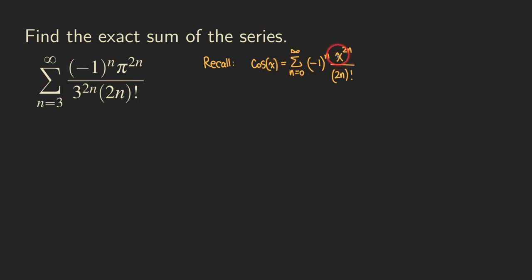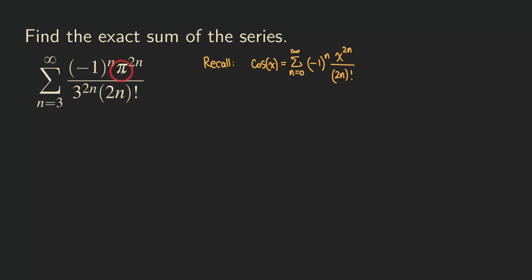The thing that's different is that we do not have a variable here. If we have a variable, then we cannot really find the sum, because x is the variable — it depends on what number you plug in to find the sum. But here, we have some stuff raised to the 2n in the numerator, and in the denominator we also have some stuff raised to the 2n. So if we put that together, we actually have pi divided by 3, and then that fraction raised to the 2n power — doesn't that look like x to the 2n power?